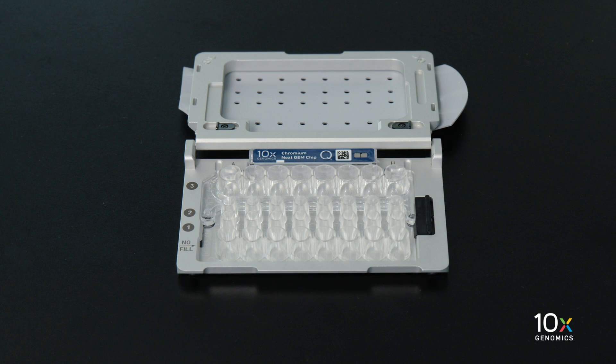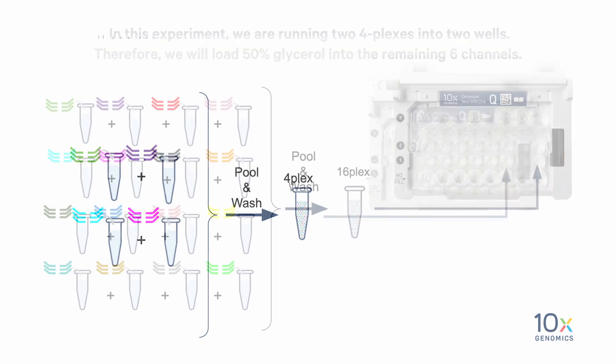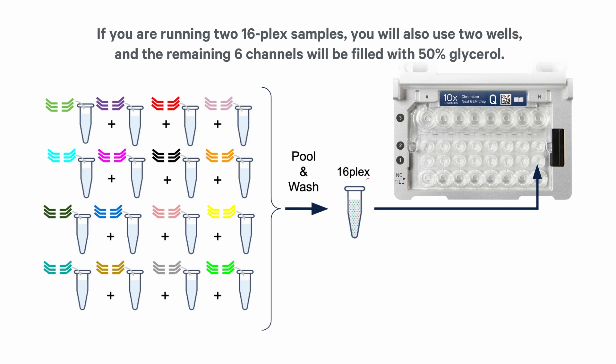We are ready to load reagents into the wells. Now we will load 50% glycerol into any unused wells in the chip. In this experiment we are running 24-plexes into two wells, therefore we will load 50% glycerol into the remaining six channels. If you are running 2 16-plex samples, you will also use two wells.